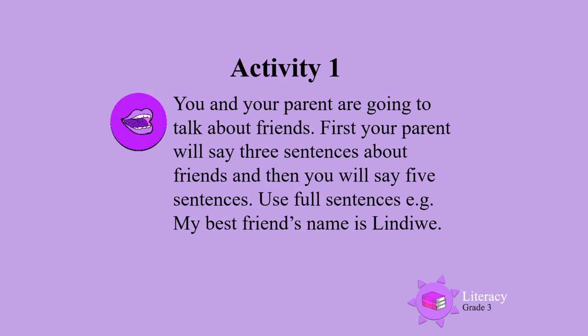Activity 1. You and your parent are going to talk about friends. First, your parent will say three sentences about friends and then you will say five sentences. Use full sentences. For example, my best friend's name is Lendiwe — that is a full sentence.